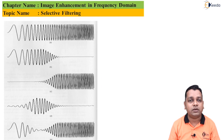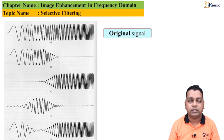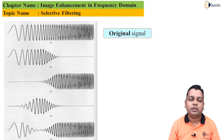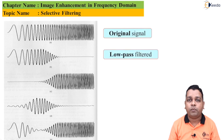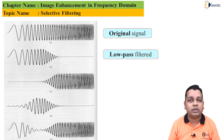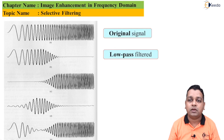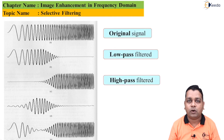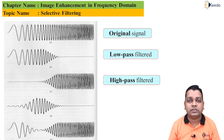Taking the case of a one-dimensional signal, the original signal possesses low frequency components on the left-hand side and high frequency components on the right-hand side — frequency increases from left to right. When we apply a low pass filter, the high frequency area is completely suppressed and only the low frequency portion is allowed through — this is the low pass filtered signal. Conversely, we can suppress low frequencies and allow only high frequency components, giving us the high pass filtered signal.